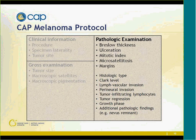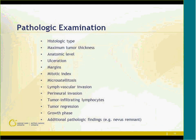The clinical information and gross examination cover some protocol items — tumor size is usually in wide excision specimens, as are microscopic satellites. Now let's move on to the pathologic examination criteria. The checklist includes: histologic type, maximum tumor thickness, anatomic level, ulceration, margins, mitotic index, microsatellitosis, lymphovascular invasion, perineural invasion, tumor infiltrating lymphocytes, tumor regression, growth phase, and additional pathologic findings.